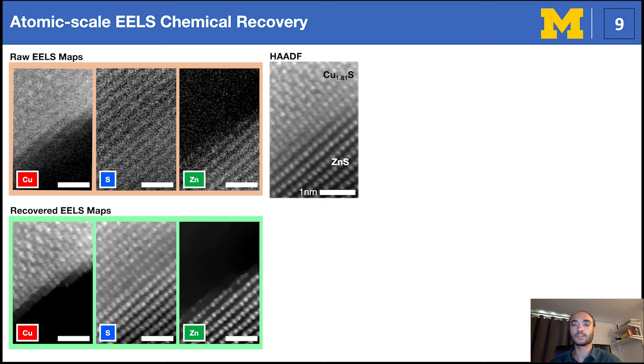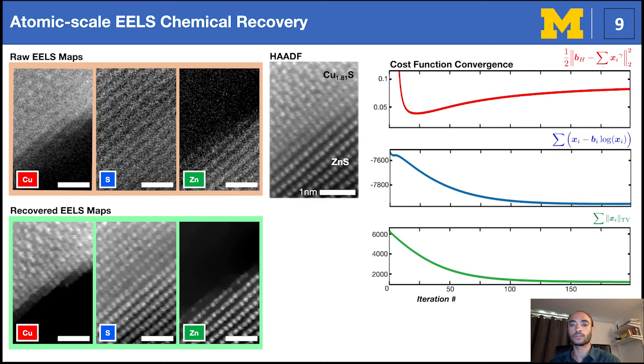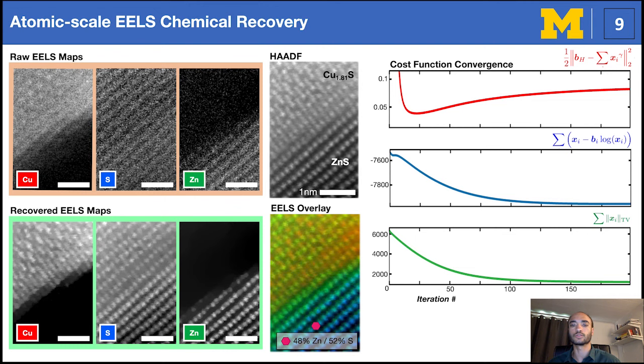We can assess reconstructions by inspecting convergence for all the components in the cost function. The model term tends to overshoot as it competes against the data consistency, while the two subsequent components decay monotonically. Not only so, the ratio of pixel values measures local relative chemical concentration. Here, the zinc sulfide estimates match the expected 50-50 decomposition from the crystal stoichiometry, and remains consistent for the copper sulfide layer as well.